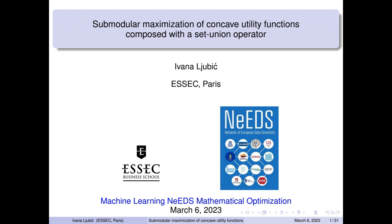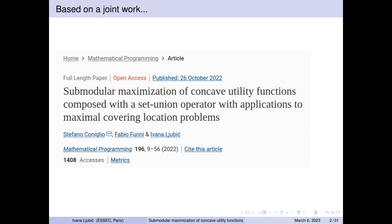Thank you very much, Dolores, for this invitation. My talk today is devoted to a special class of problems related to maximization of submodular functions. We will look into problems where we have concave utility functions combined with set union operators — a special class of discrete optimization problems for which we have developed several branch-and-cut approaches, studied from theoretical and computational perspectives. This is joint work with colleagues Stefano Coniglio, now professor in Bergamo, and Fabio Furini, now at the University La Sapienza in Rome, recently published in Mathematical Programming.